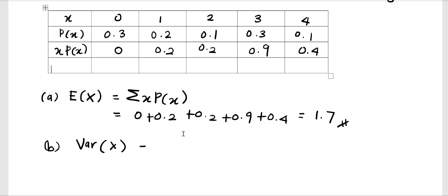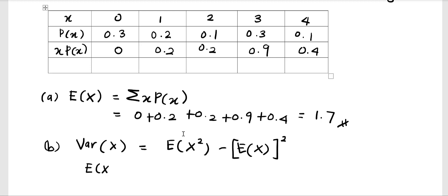The second question asks to find the variance of x. The formula for variance is E(X²) minus E(X) squared. We already have E(X) equal to 1.7, but we need E(X²). The formula for E(X²) is the summation of x² times the probability of x.